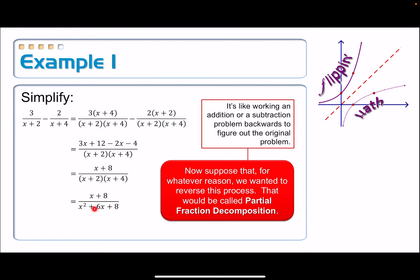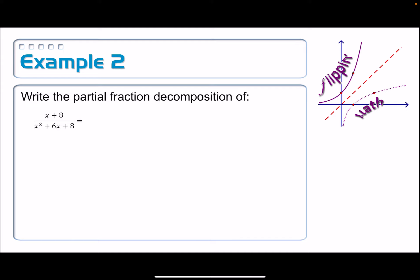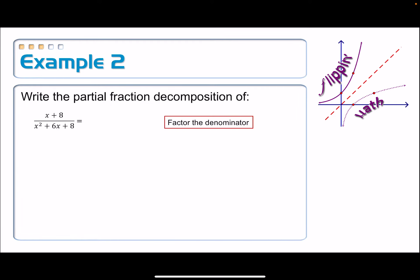Let's start with this equation. Step number one is to factor the denominator — not the top, the bottom. You factor the denominator. That one's pretty easy to do: x plus 2 times x plus 4.